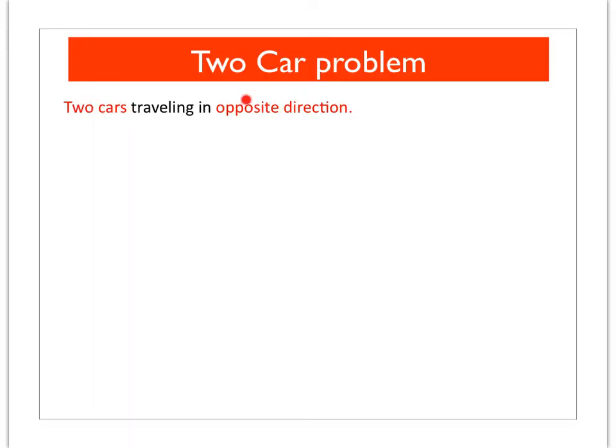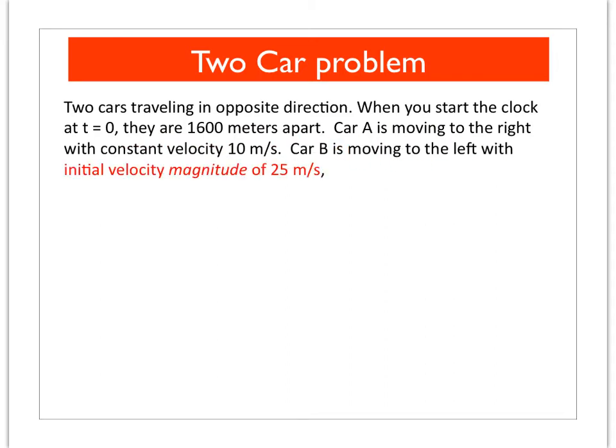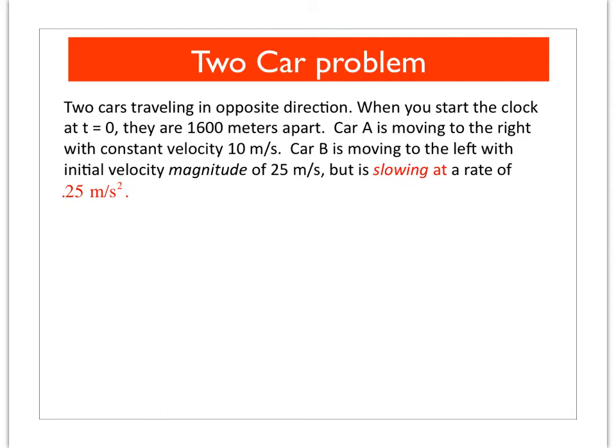So we have two cars that are moving in the opposite direction. Clock starts at t equal to zero when the two cars are 1600 meters apart. Car A is moving to the right with constant velocity 10 meters per second. Car B is moving to the left with an initial magnitude of 25 meters per second but slowing at a rate of 0.25 meters per second squared. Relative to car A's position at t equal to zero, where do they pass? And how fast was car B moving when they passed? These are classic kinematics problems.